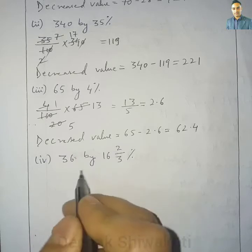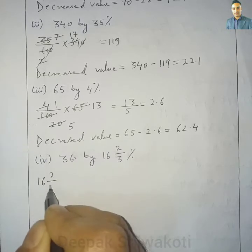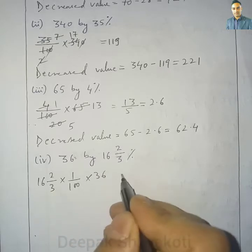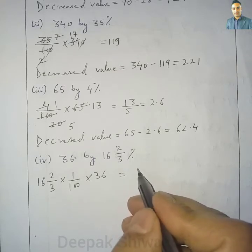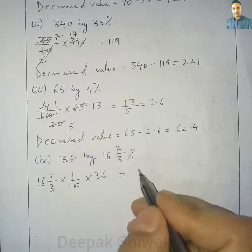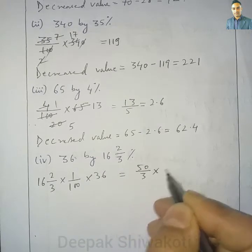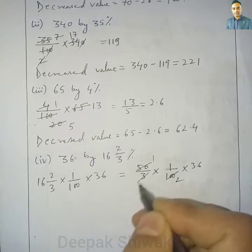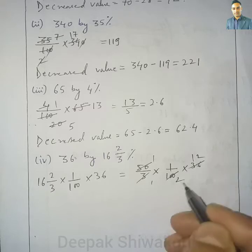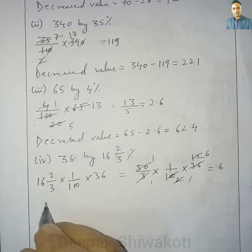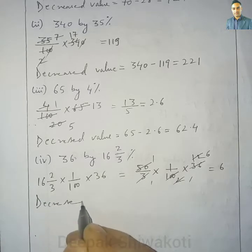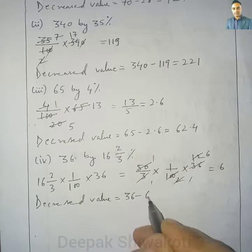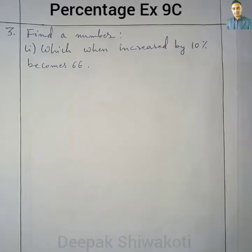Question 2.4: Decrease 36 by 16⅔%. Here 16⅔% means 50/3 × 1/100 × 36. Simplifying: 50 × 36 / 300 gives us 6. The decreased value is equal to 36 minus 6, which equals 30.